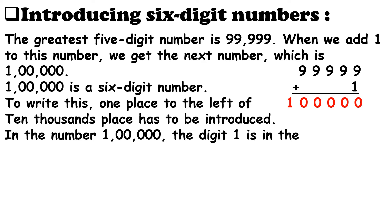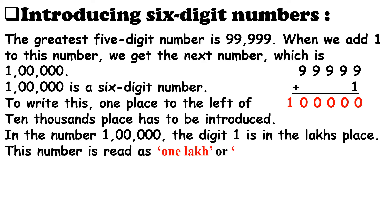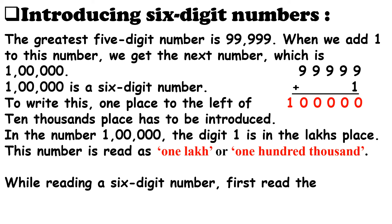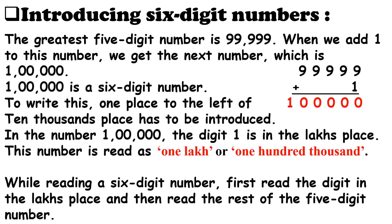To write this, one place to the left of the 10-thousands place has to be introduced. In the number 1 lakh, the digit 1 is in the lakhs place. This number is read as 1 lakh or 1,00,000. While reading a 6-digit number, first read the digit in the lakhs place and then read the rest of the 5-digit number.